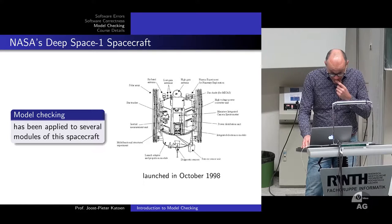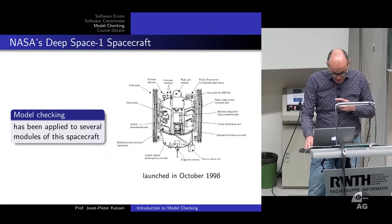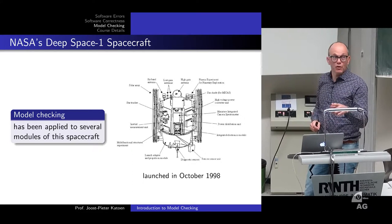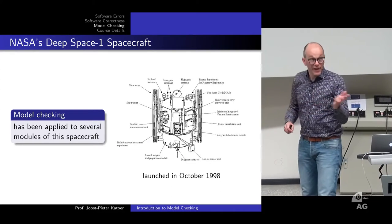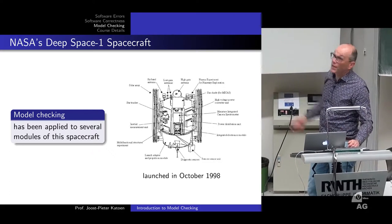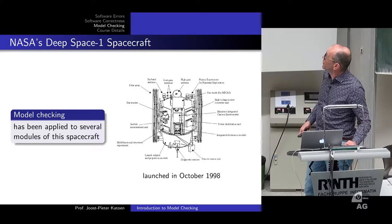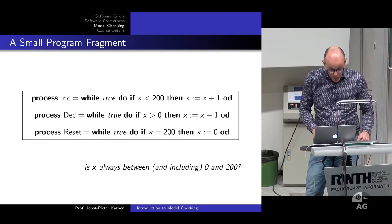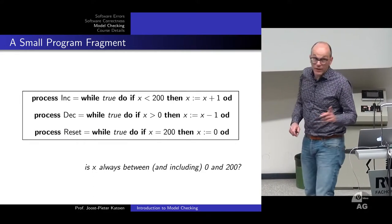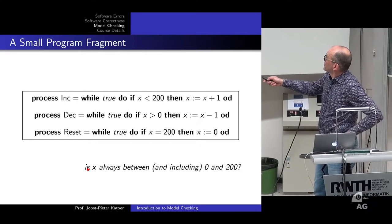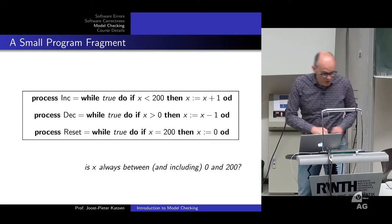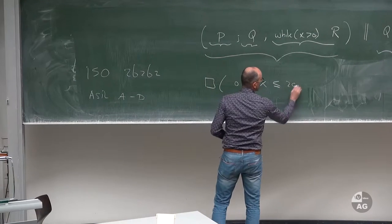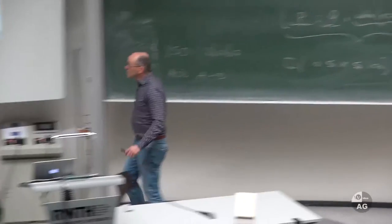One example: a piece of code from NASA's Deep Space One spacecraft, abstracted a lot. Holzmann and his team — the developer of Spin, who heads the group at the Jet Propulsion Laboratory in Pasadena, part of NASA — applied model checking to several modules of this spacecraft. Here is a three-threaded program fragment with one shared variable x, and the property we are interested in is: x is always between 0 and 200 inclusive. Expressed as a temporal formula: box (0 ≤ x ≤ 200).